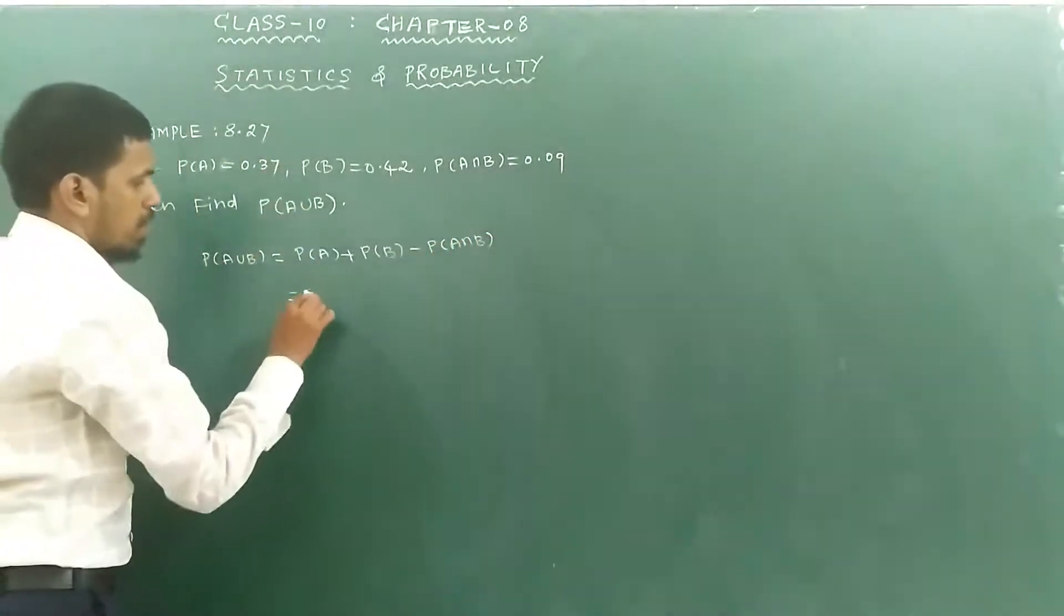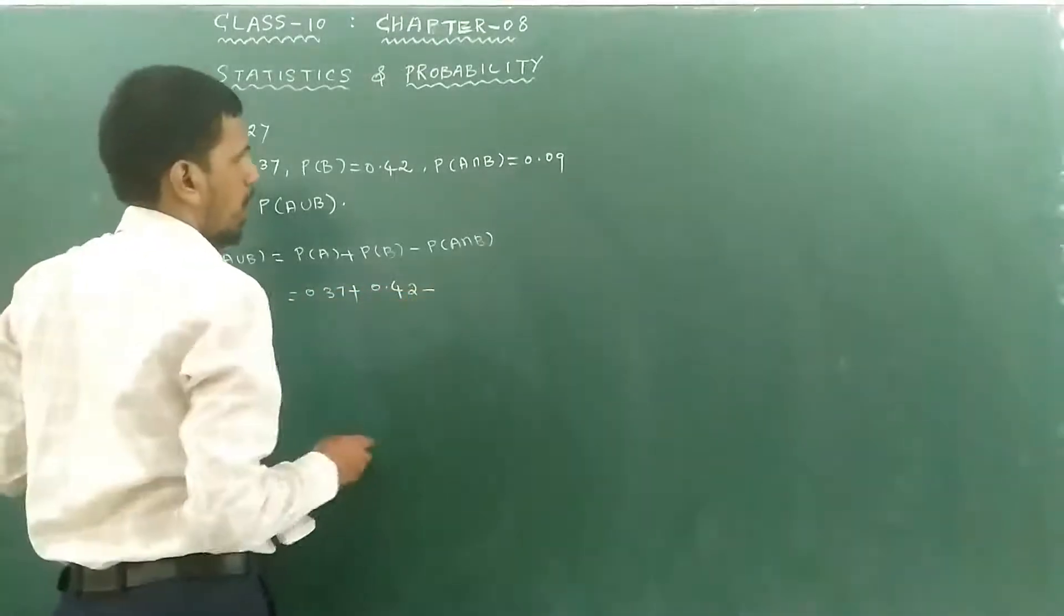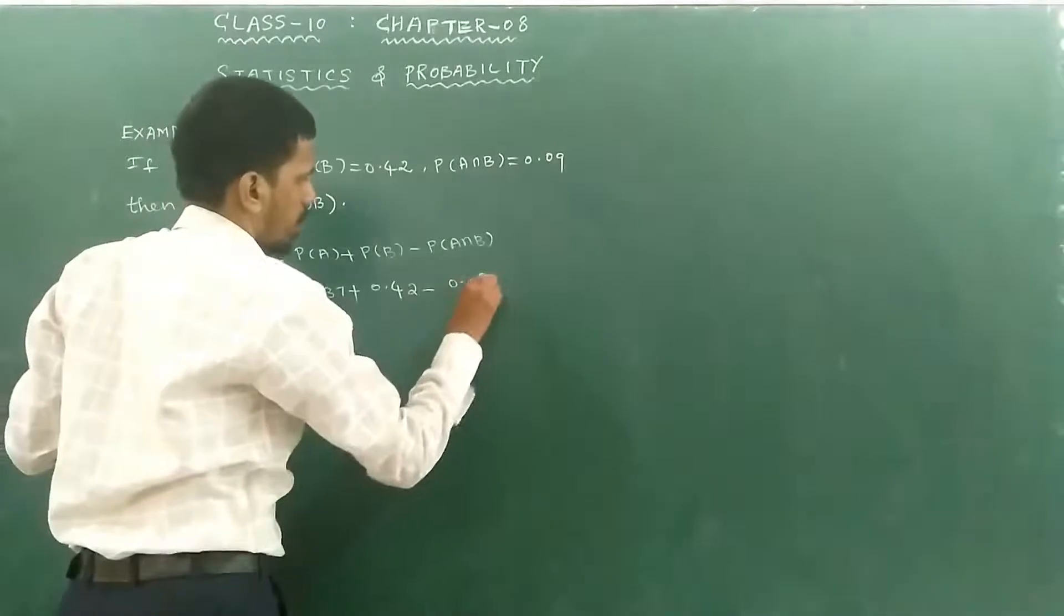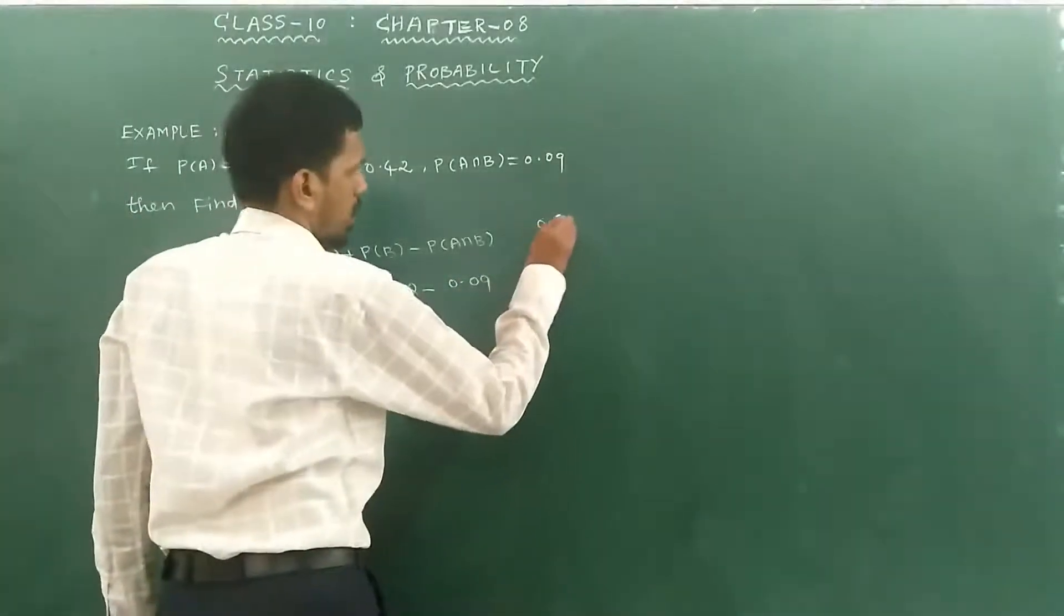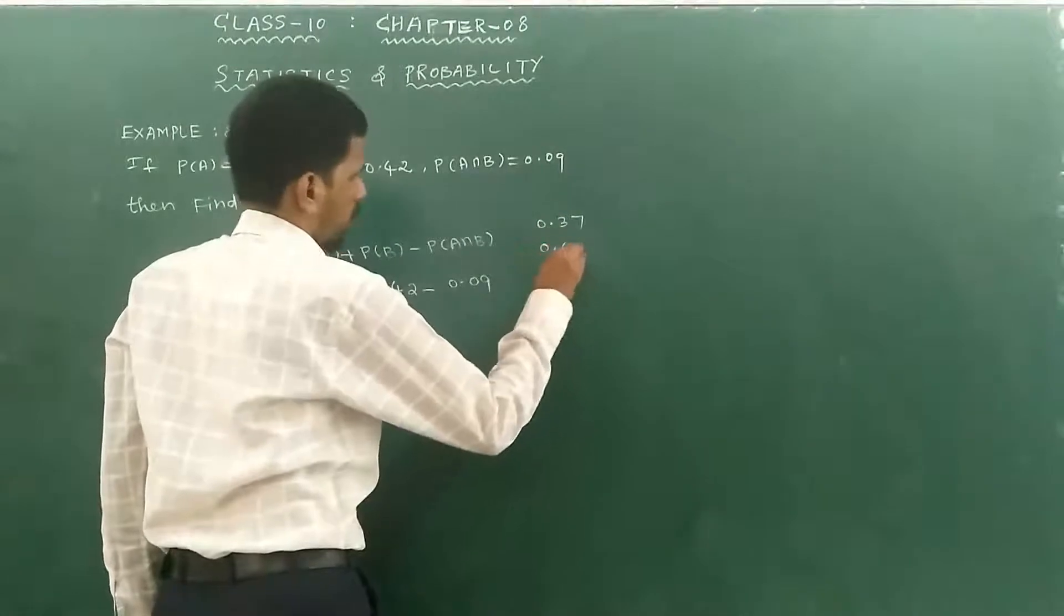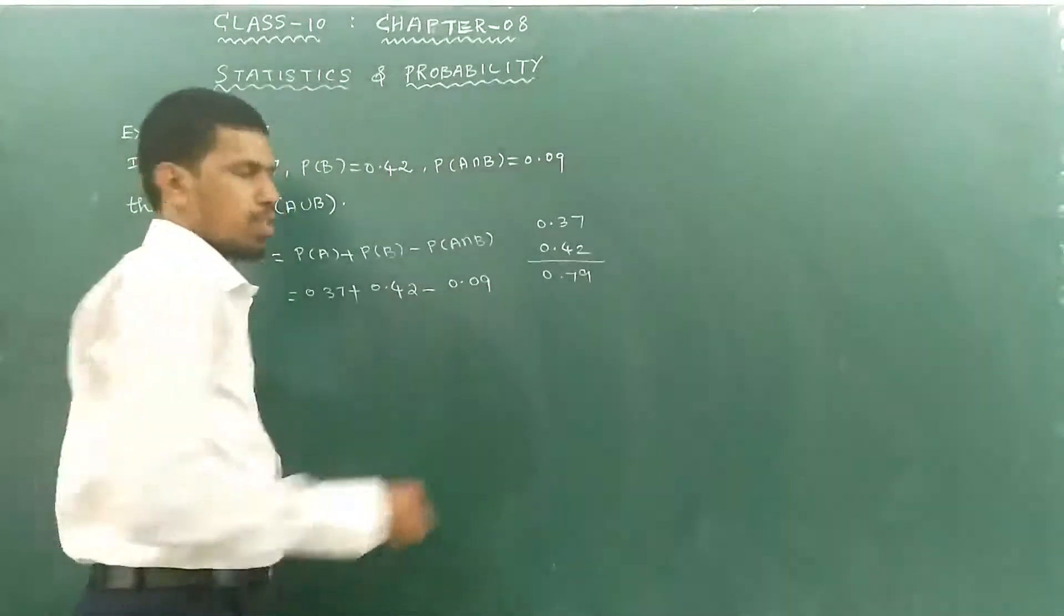So what is P(A)? It's 0.37 plus P(B) 0.42 minus P(A intersection B) 0.09. How do we add? First we add 0.37 and 0.42 together.